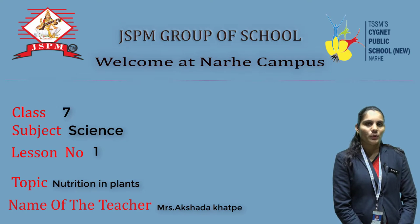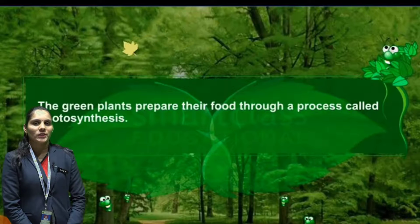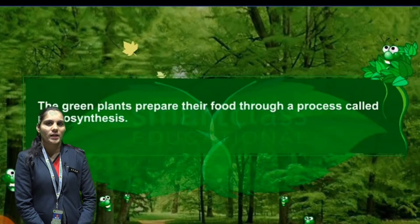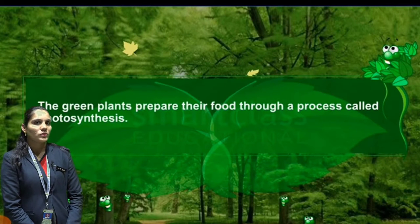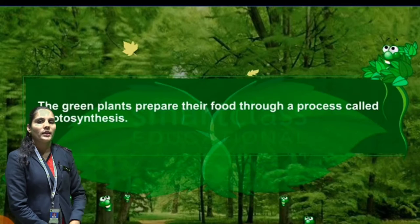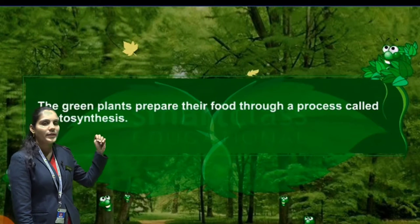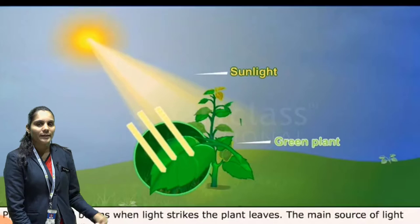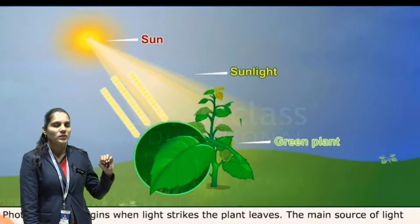Myself Akshada Khatpayee. Today we are here to learn about the amazing process of photosynthesis from class 7. First, let us understand what is meant by the photosynthesis process. It is the process in which the plant makes its own food with the help of sunlight and the chlorophyll pigment. That process is known as the photosynthesis process.